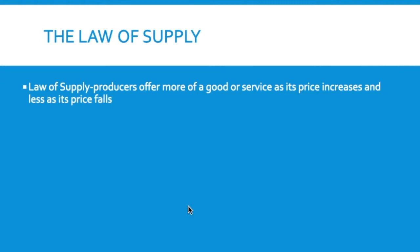So the opposite of demand: when consumers are buying things, they want to buy more at low prices and less at high prices. As a supplier or producer, you want to provide more of a good or service when the price increases because you stand to make profit. Profit motive is what drives producers. As prices go up, you get more incentive to produce more, and if price falls, you have less incentive and start to produce less.